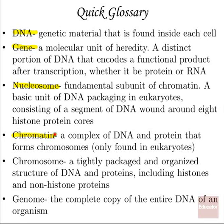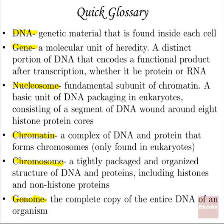Chromatin is a complex of DNA and protein that forms chromosomes, and we only find this in eukaryotes — chromatin itself is not chromosomes. A chromosome is a tightly packaged and organized structure of DNA and proteins, including histone as well as non-histone proteins. And finally, a genome is the complete copy of the entire DNA sequence of an organism.